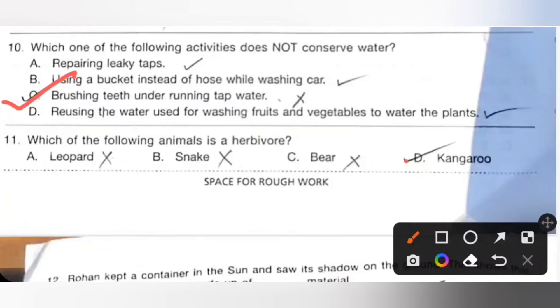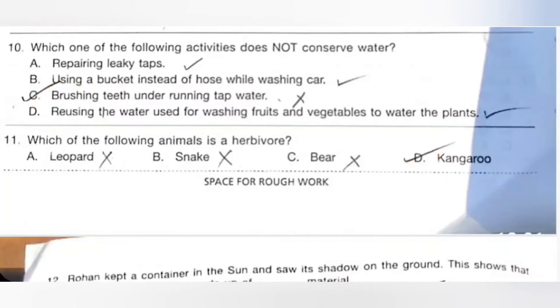Eleventh one: Which of the following animals is a herbivore? A: Leopard, B: Snake, C: Bear, D: Kangaroo. So A and B are carnivores, Bear is an omnivore. So kangaroo, option D is a herbivore. Option D is the correct answer.